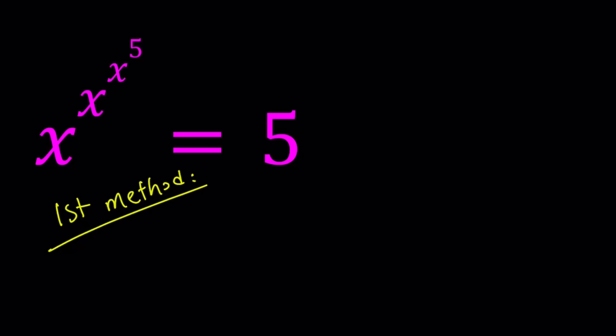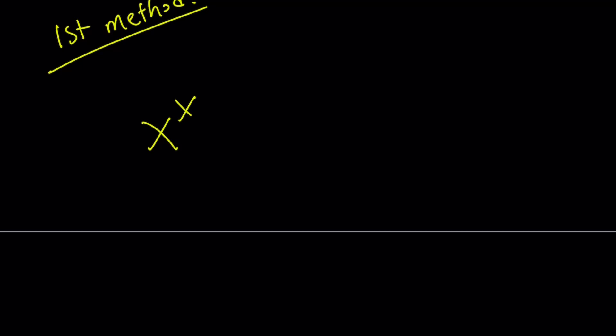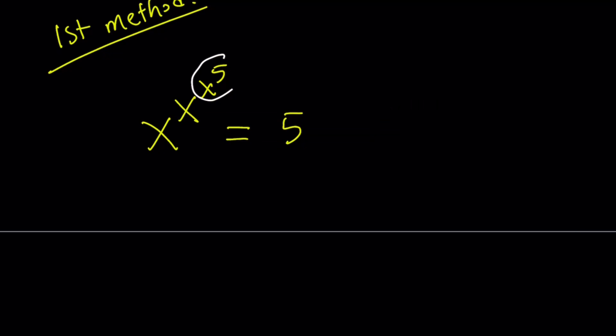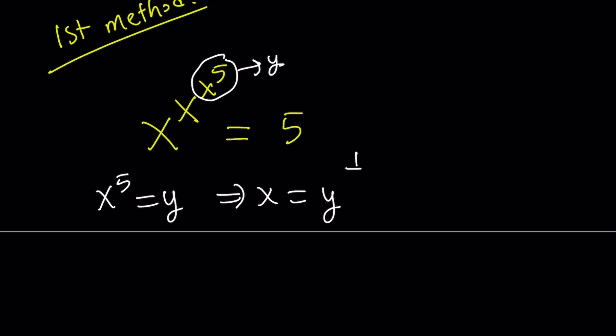For my first method, I'm going to use substitution. Let me rewrite the expression: x to the power x to the power x to the power 5 equals 5. I'm going to call this expression y, which means x to the fifth power equals y, or x can be written as y to the power 1 over 5. Now I'm going to replace x to the fifth with y, and x with y to the power 1 fifth, and let's see what happens.